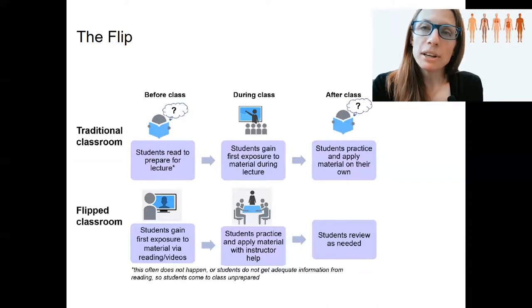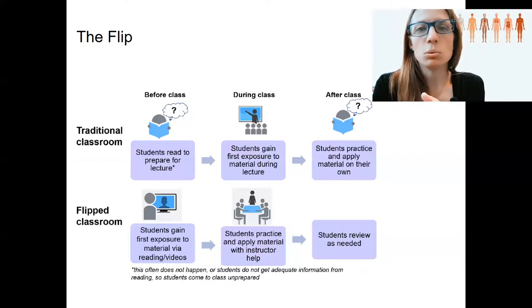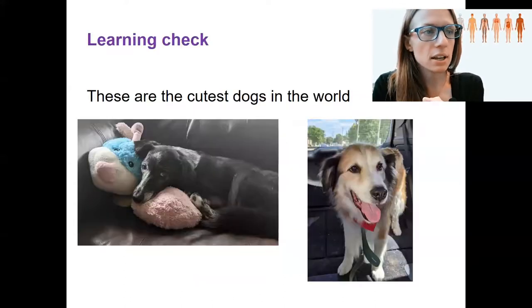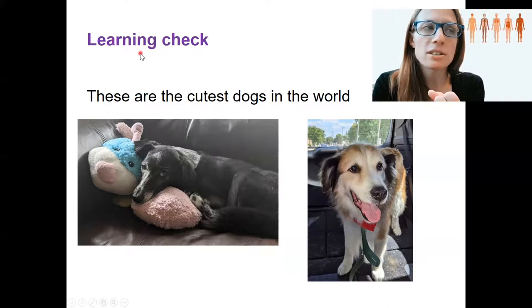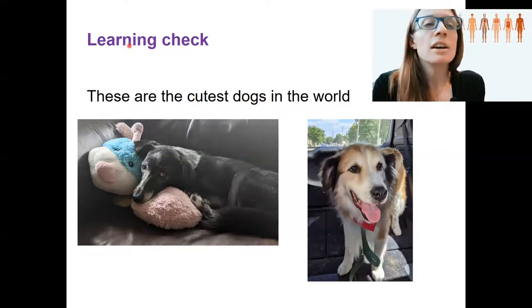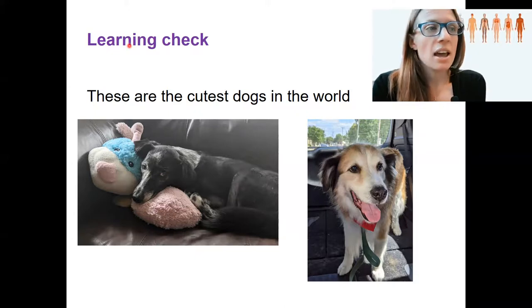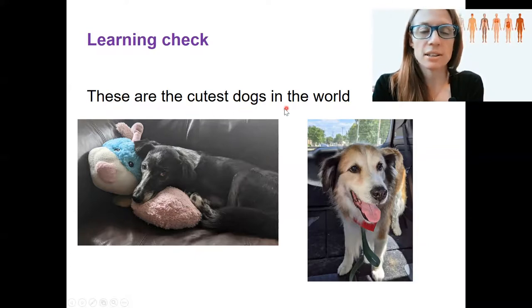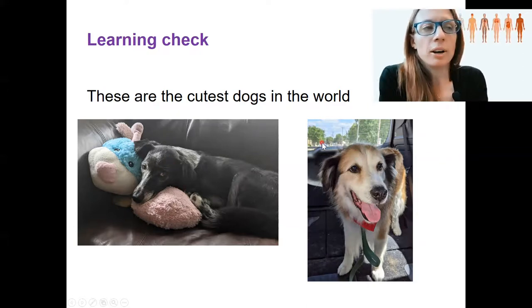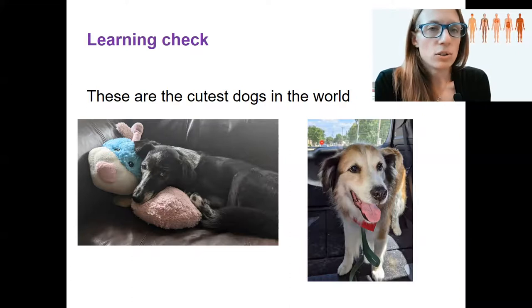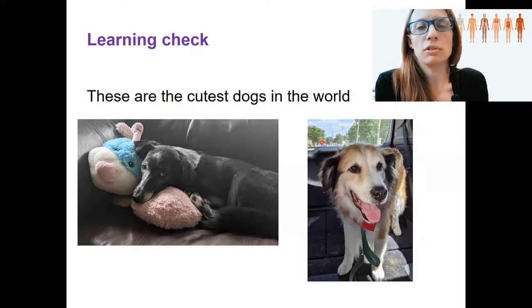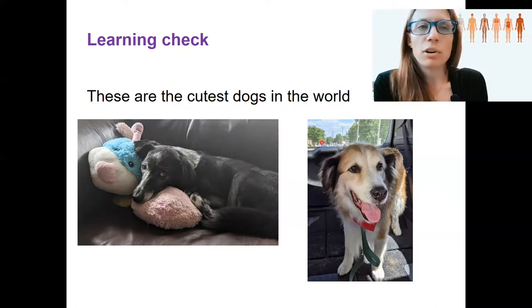Throughout the lecture videos, a way I keep you engaged is learning checks. Throughout the videos you will see what looks like this — oftentimes in purple bold letters. I will try to let you know how many learning checks to look for each week, because you're going to answer these as you go through the videos and turn them in as homework. This example here shows the cutest dogs in the world — the correct answer is clearly yes — this is Sergeant Pepper and Hokkaido, obviously my dogs. Learning checks are a chance for you to check your learning. Please don't go back in your notes or spend a ton of time on them. I want to know what you've gotten from the videos at that point. They're not graded for correctness.